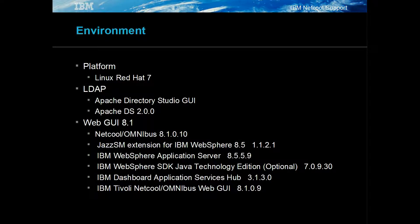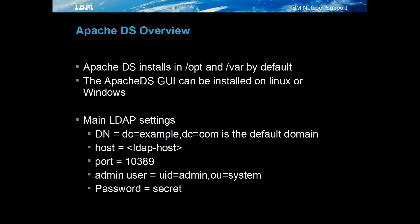The environment used was Red Hat 7 with Apache Directory Studio and WebGUI 8.1. Apache Directory Studio installs on Linux or Windows, but in this example Linux was used. The default settings were used apart from the LDAP server port, which was increased to 10389 to prevent port conflicts and allow the process to run as non-root.